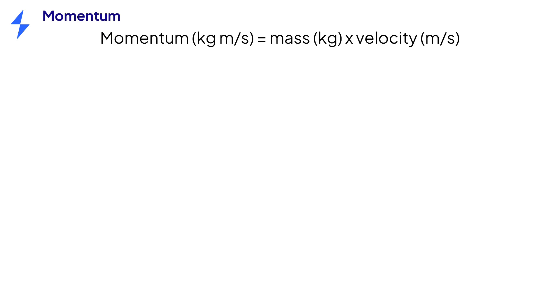Momentum is calculated using the equation: momentum in kilograms meters per second is equal to mass in kilograms times velocity in meters per second. The symbol p is used to represent momentum.